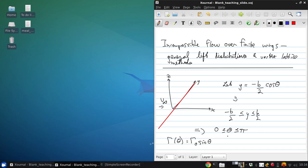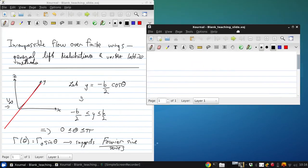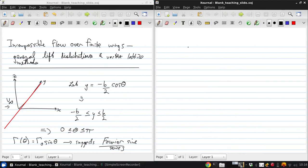So what this suggests is that a Fourier series, specifically a Fourier sine series, is something that we might be able to use to build up an arbitrary lift distribution. So that might look like something like this: Gamma of theta to be to infinity, the sum over some n terms of a Fourier sine series.